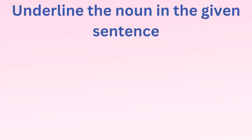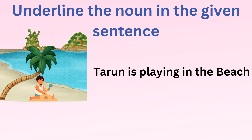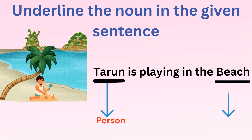Let's underline the noun in the given sentence. Tarun is playing in the beach. Here, Tarun is the name of a person, and beach is the name of a place.